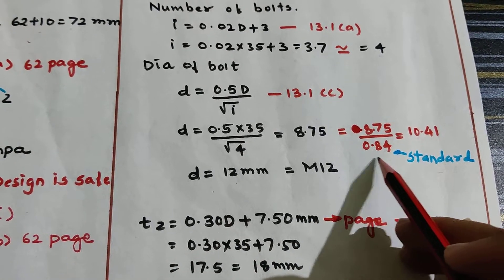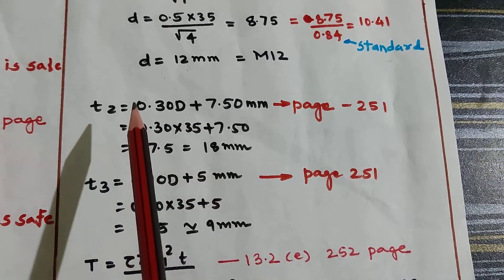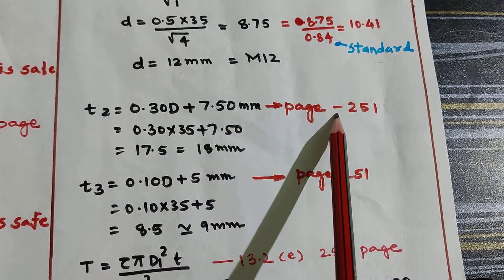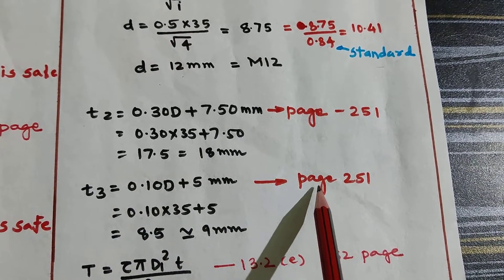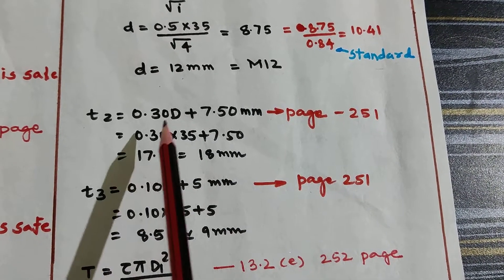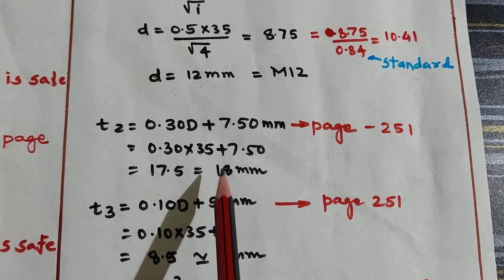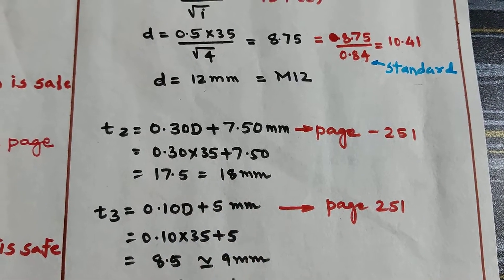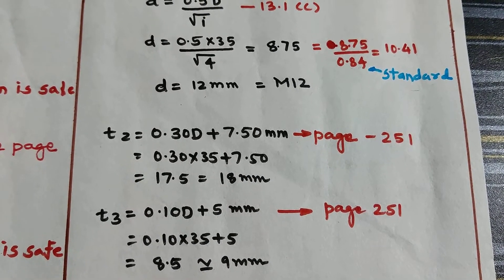Next, thickness of the protective layer is also on page 251. Use the T2 and T3 formulas and get the answers: for first I got 18 mm and for second I got 9 mm. Thank you.